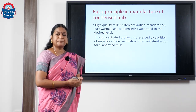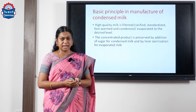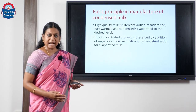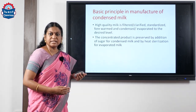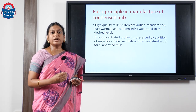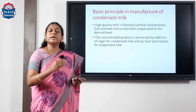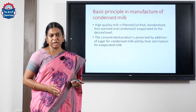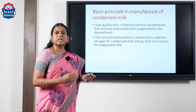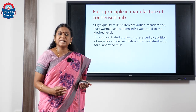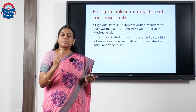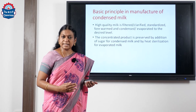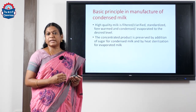Now looking into the basic principle in making sweetened condensed milk: a high-quality milk is filtered, clarified, standardized, preheated, and then subjected to condensation or evaporation. After this, we have two choices: one is addition of sugar as a preservation technique, and the other is subjecting it to heat sterilization. If we add sugar, we refer to the product as sweetened condensed milk; if we go for heat sterilization, then we call the product evaporated milk.